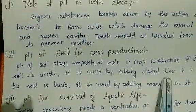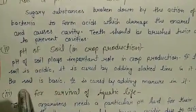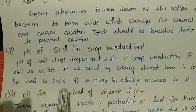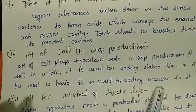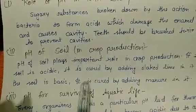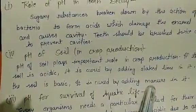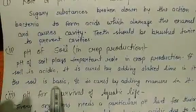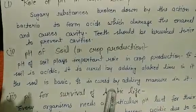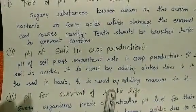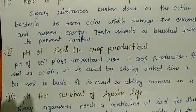Sometimes the pH of soil becomes too basic due to various factors. If the soil pH becomes basic, you may add organic manure or compost to it. Manure is slightly acidic in nature, so when added to basic soil, it neutralizes the base and restores the pH level of the soil. This is the role of pH in crop production.